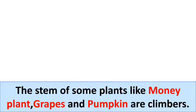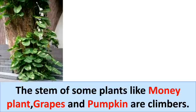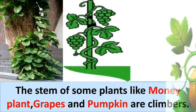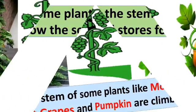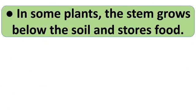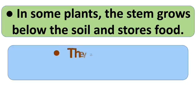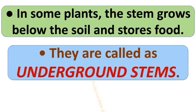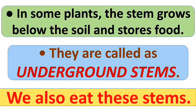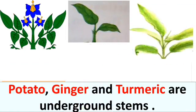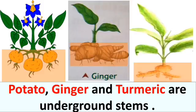Some plants have very thin and weak stems, and such plants require support to grow. They are called climbers. Examples include money plant, grapes, and pumpkins. In some plants, the stem grows below the soil and stores food. They are called underground stems, and we also eat these stems because they are edible. Examples are potatoes, ginger, and turmeric — they are underground stems, not roots.